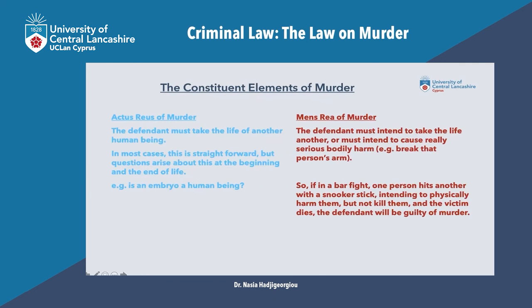So having described the consequences of a guilty finding of murder, let's focus on the actus reus and the mens rea of murder. The actus reus of murder is that the defendant has taken the life of another human being. In the majority of cases this is pretty straightforward — if the victim is dead and is dead as a result of the defendant's actions, for example the defendant shot him, poisoned him, or strangled him, then you have the actus reus of murder.